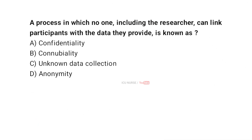A process in which no one, including the researcher, can link participants with the data they provide is known as: A. Confidentiality. B. Connubiality. C. Unknown data collection. D. Anonymity. And the correct answer is A. Confidentiality.